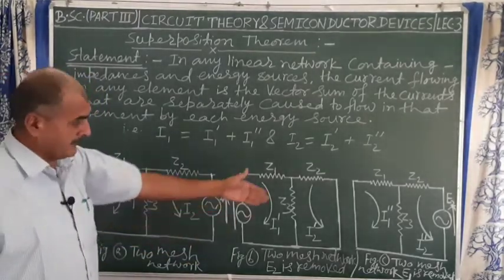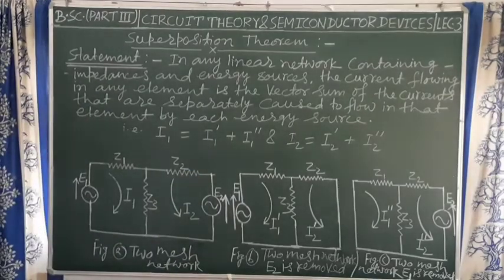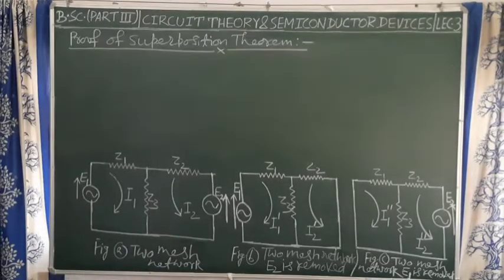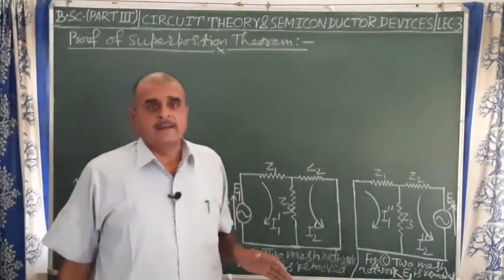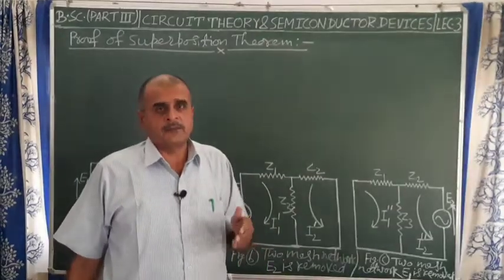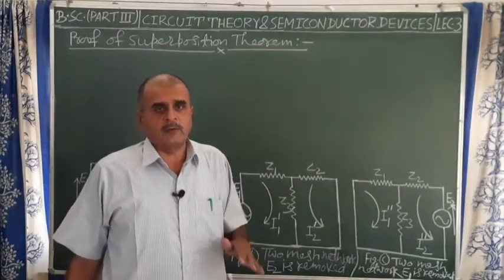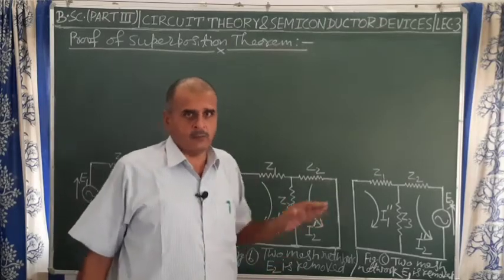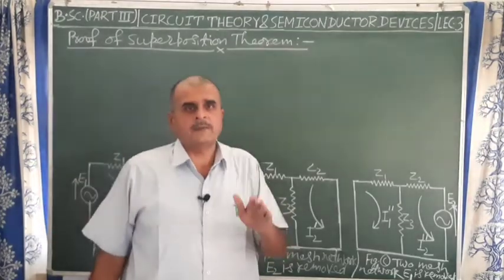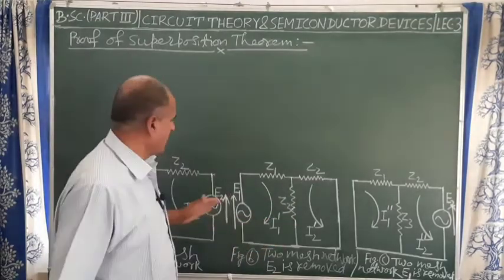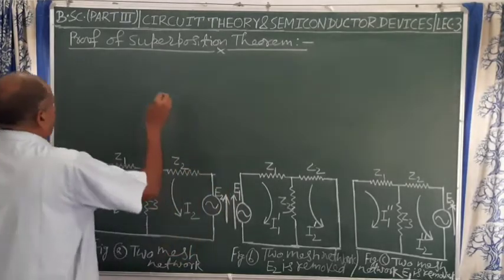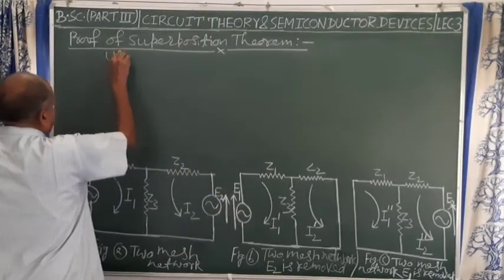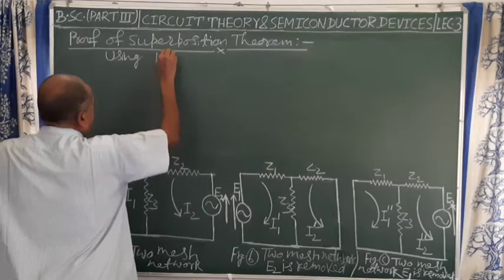Now, proof of Superposition Theorem using KVL — that is Kirchhoff's Voltage Rule, or Kirchhoff's Second Rule, also called the mesh rule or loop rule — applied to each loop in figure A, figure B, and figure C respectively.